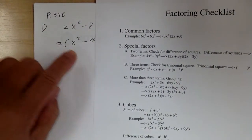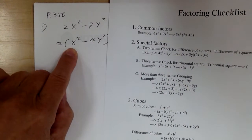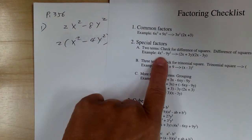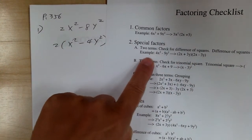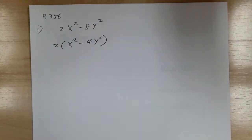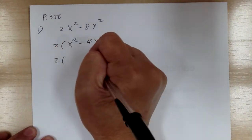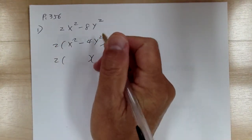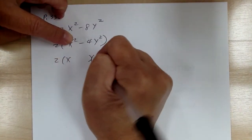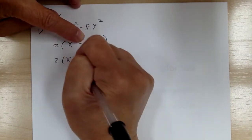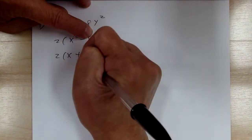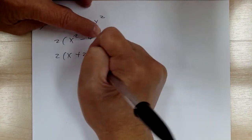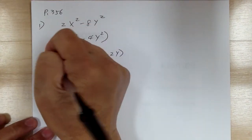Make sure you go to the checklist. Step 1, common factor. Step 2, you have to check for the difference of squares. So let's make it into two sets of parentheses. You need x and x, plus or minus, and 2 and 2 for the 4, and y and y for y squared. And that's it.